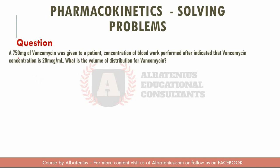Let's take a look at this test question. A dose of 750 milligrams of vancomycin was given to a patient. The blood work performed after indicated that the vancomycin concentration was 20 micrograms per milliliter. What is the volume of distribution of vancomycin? So there are multiple things we need to address. We have only two values: the dose, which was 750 milligrams, and a concentration of 20 mcg per milliliter.